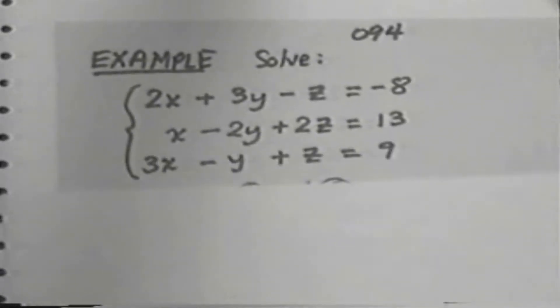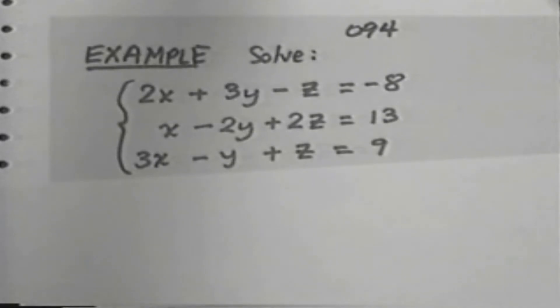Let's take a look at our example. Our example is to solve this system. Now, be sure you copy this down correctly. One of the biggest problems we have in solving a long problem like this is miscopying something. All it takes is one miscopied number or sign or placement to ruin everything. So let me read it out to you.